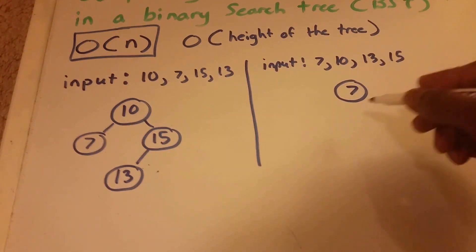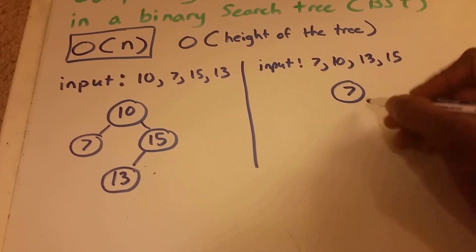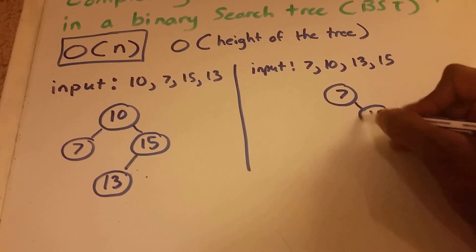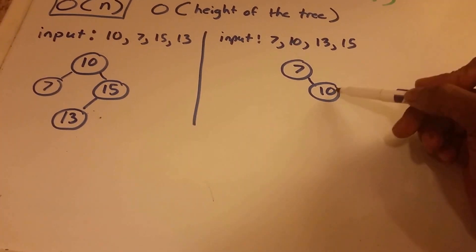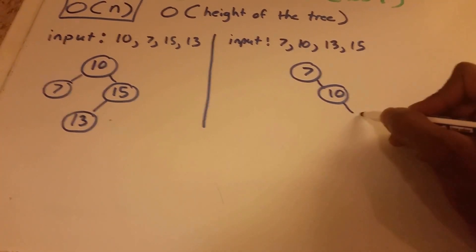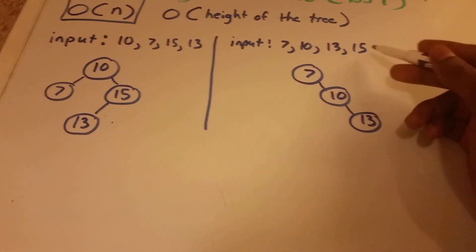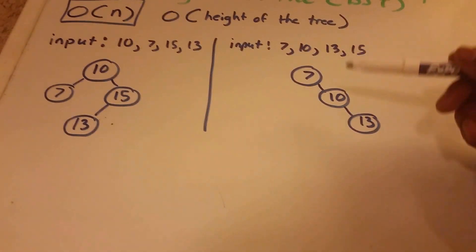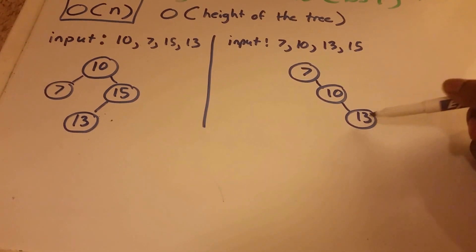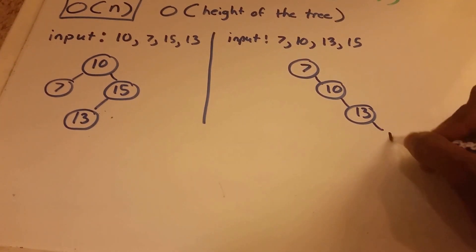We have 7. 10 is greater than 7, so it's going to go to the right. 13 is greater than 7, and 13 is greater than 10, so it also goes to the right. Then we have 15. 15 is greater than 7, 15 is greater than 10, and 15 is greater than 13, so once again to the right.